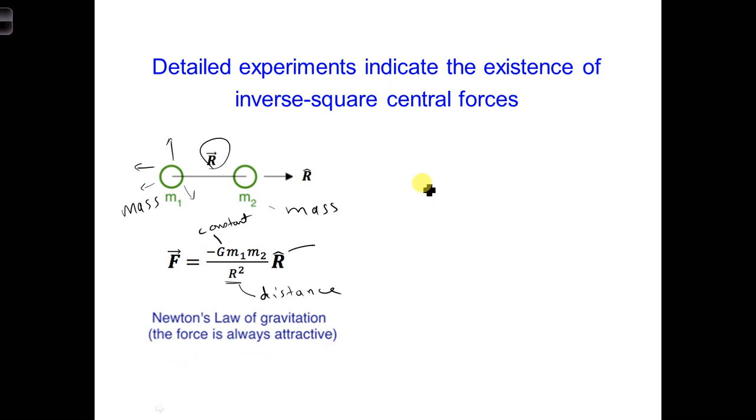Now, since the surface area of a sphere, the equation is 4 pi r squared, the strength of the force field reduces as 1 over r squared. That's where we get the r squared on the bottom. That's the inverse square law.